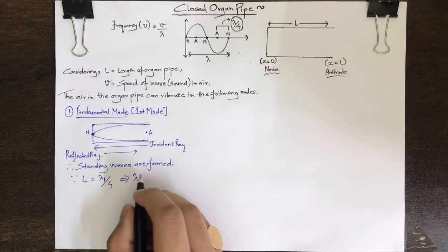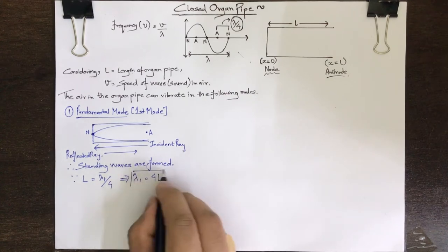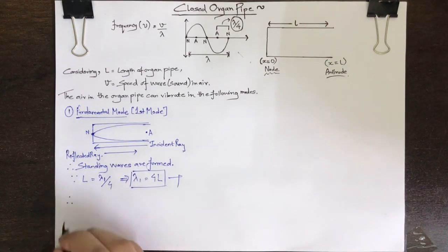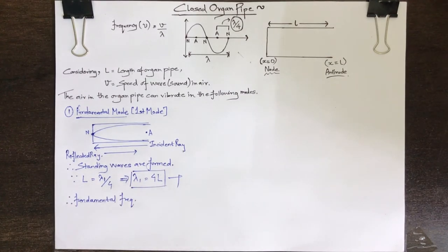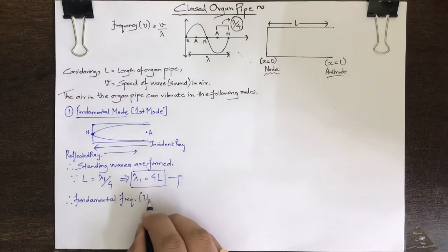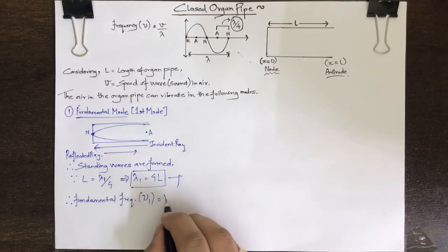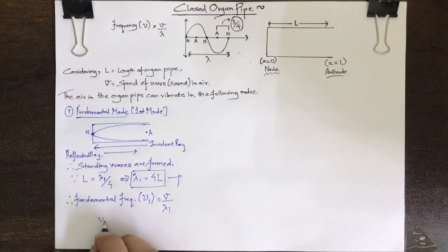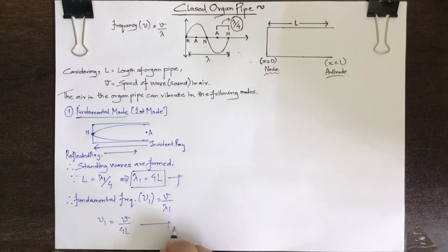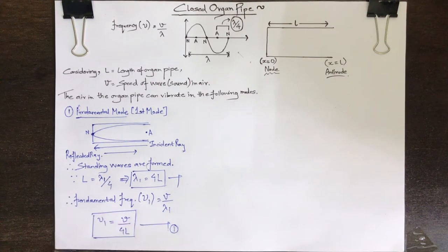This implies that lambda 1 is equal to 4L. Therefore, the fundamental frequency denoted by mu 1 is equal to V upon lambda 1, which finally gives us the expression mu 1 is equal to V upon 4L.